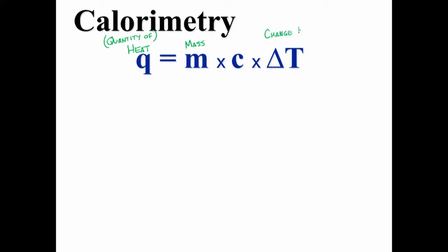Delta t is the change in temperature. To find the change in temperature, you take the final temperature and subtract the initial temperature. Sometimes that gives you a negative number, and that just means that the temperature is going down. The last variable in our equation, c, stands for specific heat capacity of a material.